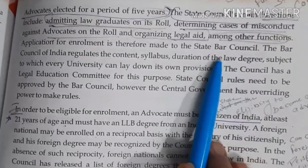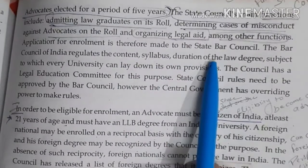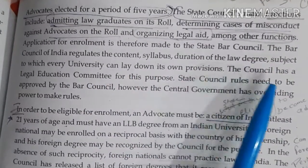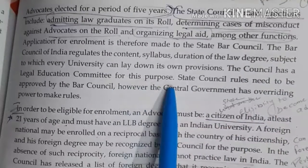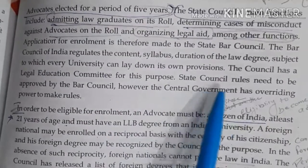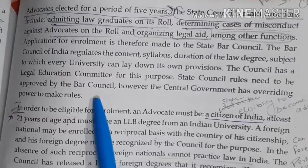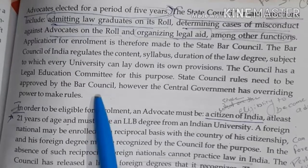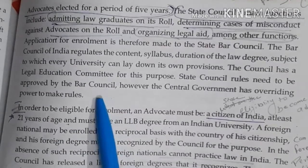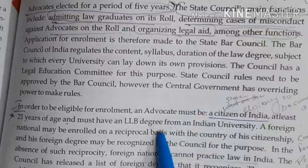The Bar Council of India regulates the content and duration of law degrees — three years — subject to which universities can lay down their own provisions. The Council has a Legal Education Committee for this purpose. State council rules need to be approved by the Bar Council. However, the central government has overriding power to make rules if it feels the state bar council is wrong in making rules or regulations for becoming a lawyer.